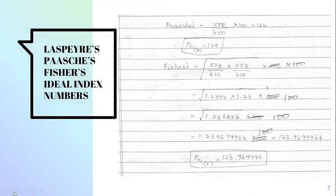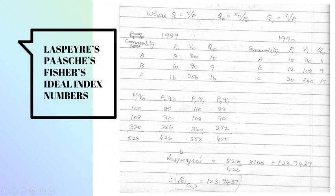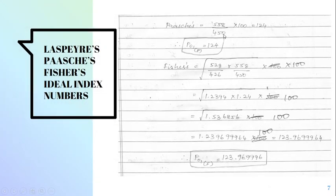Now going on to Paasche's index number. We have taken the total. We have 558 divided by 456 into 100 which is equal to 124.